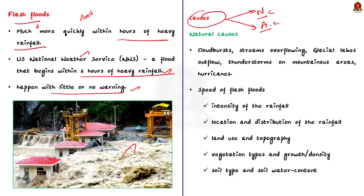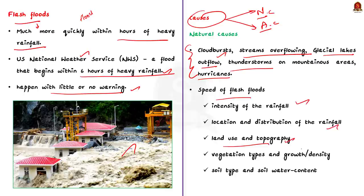Now, having seen the definition of flood and flash floods, let us see what causes them. Flash floods can be caused by a number of things. We can broadly classify the causes of flash floods into natural and anthropogenic causes. First, let us take up natural causes. The natural causes include cloud burst, river and streams overflowing their banks due to heavy rains, glacial lake outflow, thunderstorm on mountain areas, hurricanes and other tropical storms. And these are the factors that causes flash floods. Apart from these, the intensity of the rainfall, the location and distribution of the rainfall, the land use and topography, the vegetation type, soil type and the soil water content, they also determine the speed of the flash floods.